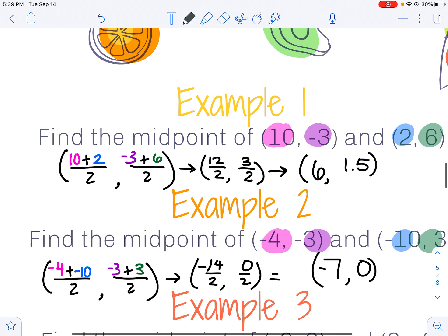Doing the same thing on example 2. My first x value, negative 4 plus my second, negative 10, divided by 2, gets me negative 14 divided by 2, which works out to be negative 7.